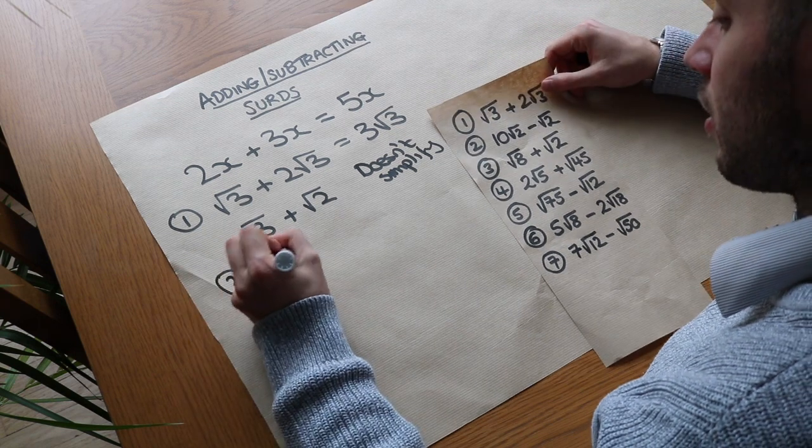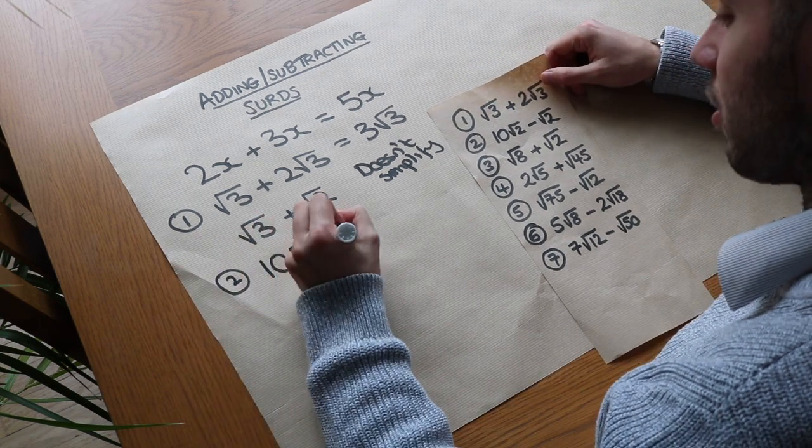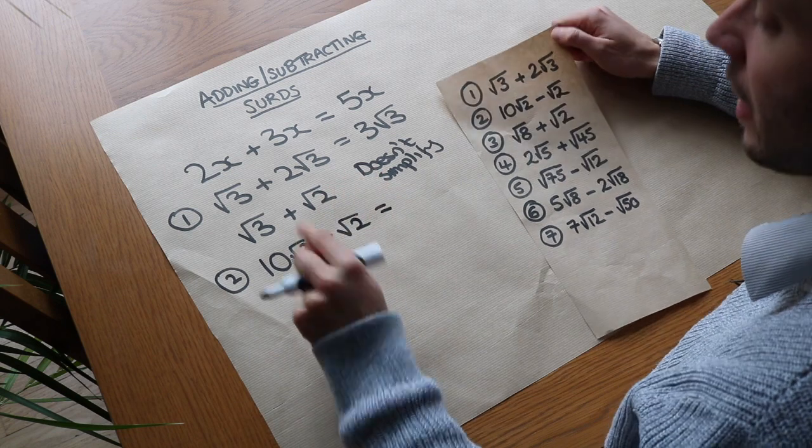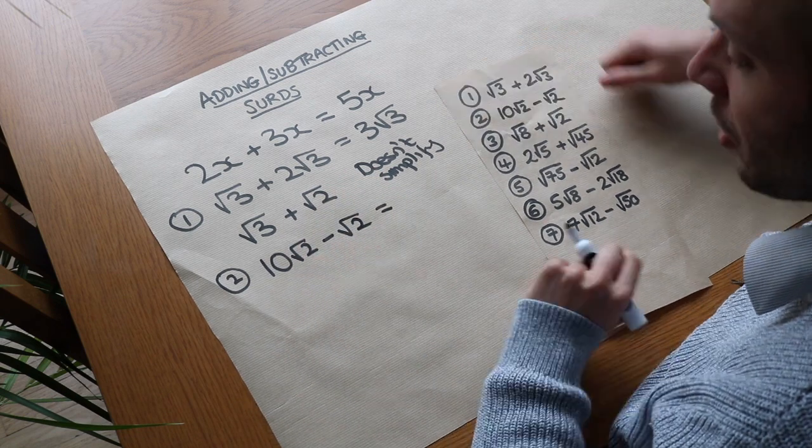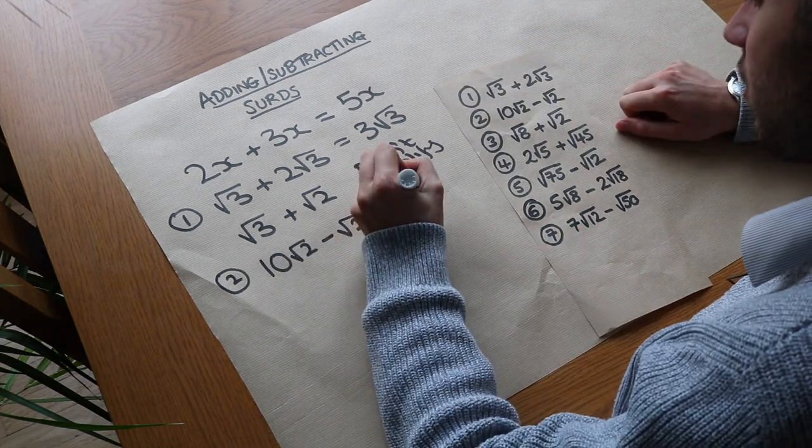We've got 10 root 2 minus root 2, so we can just think of that as 10 lots of root 2 minus 1 lot of root 2, well that's 9 lots of root 2.